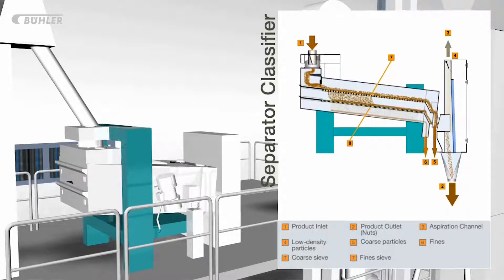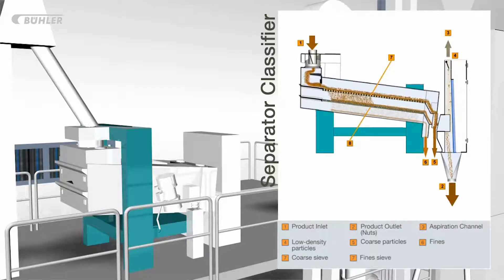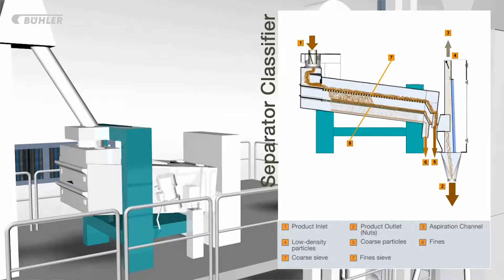This is achieved by varying sieve openings which allow smaller items to gradually pass through. The coarse and fine particles are fed into separate or combined reject streams and product in the target size range is fed into the accept stream.